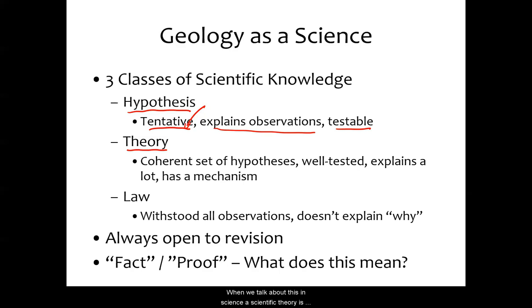When we talk about this in science, a scientific theory is bigger than a hypothesis, for one. It's a coherent set of hypotheses. It's got a lot more going on. It can explain a lot of information, like the theory of gravity. Gravity explains a whole heck of a lot of things that go on on Earth's surface, on Earth's interaction with planets, yada, yada, yada.